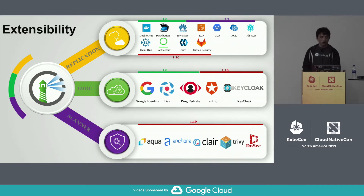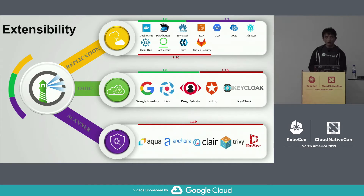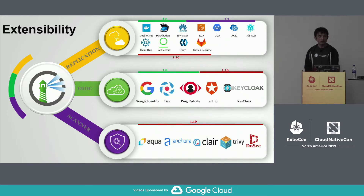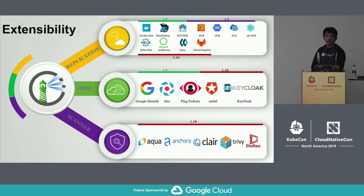OIDC integration allows Harbor to leverage an OIDC provider for authentication. Technically, all OIDC providers following the OIDC specs should work well with Harbor. We still do verification work to make sure no issues exist. In 1.8 we tried Google Identity, Dex, and PingFederate. In 1.10, we tested Okta and Keycloak, and they all work well with Harbor. Security is always the first focus for users. In 1.10, we worked together with Aqua Security and Anchore to define a standard scanner spec to let Harbor integrate scanners beyond Clair to do security scanning in a flexible out-of-the-box way.